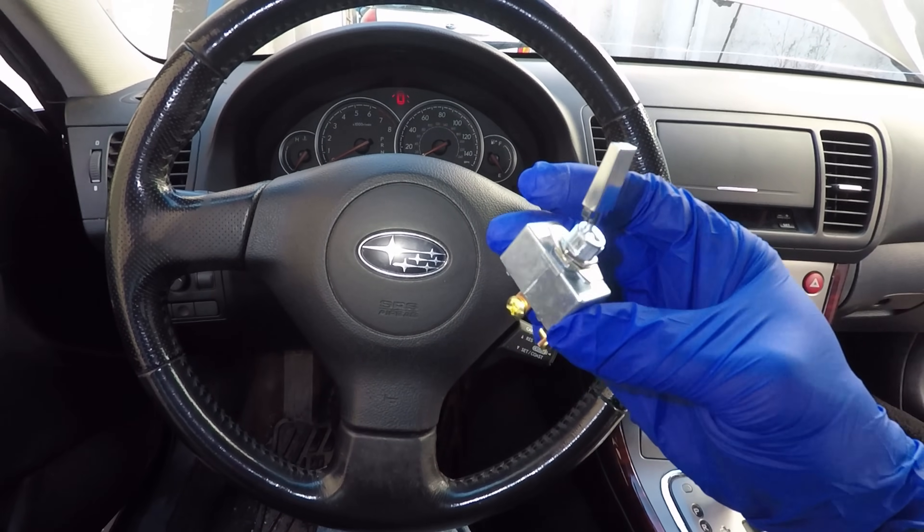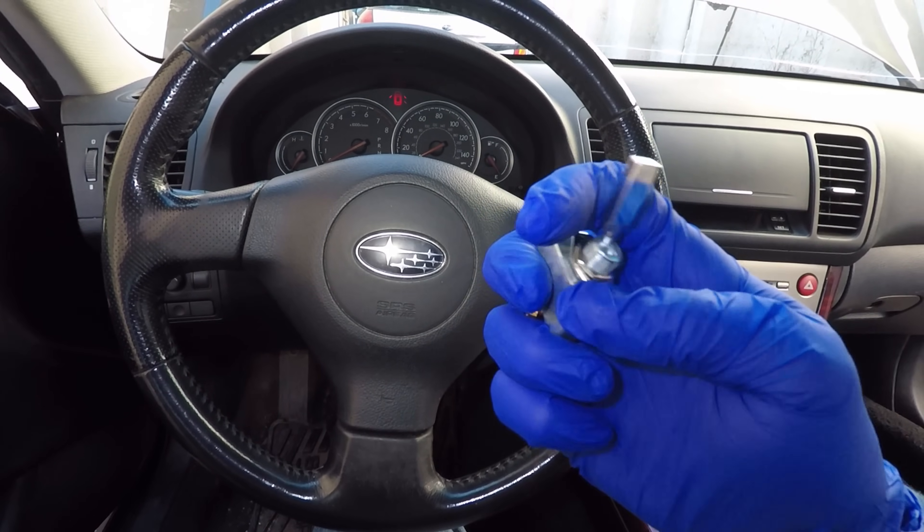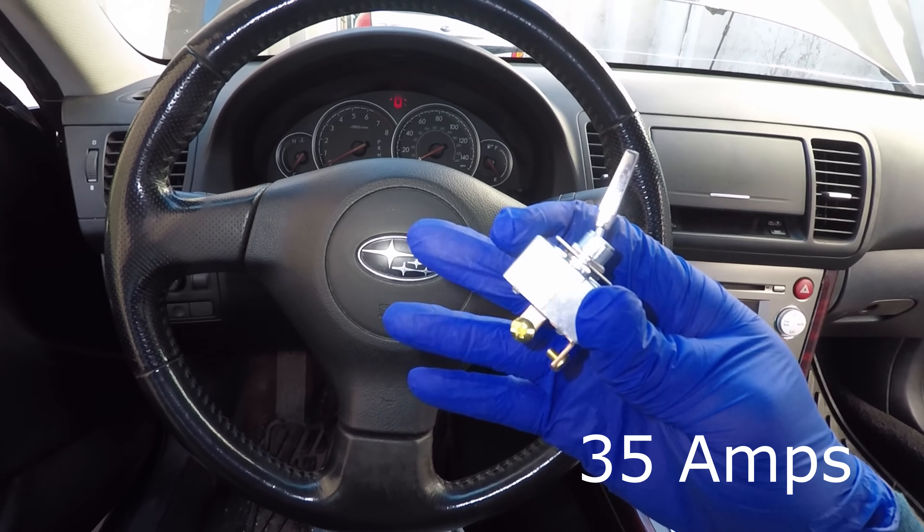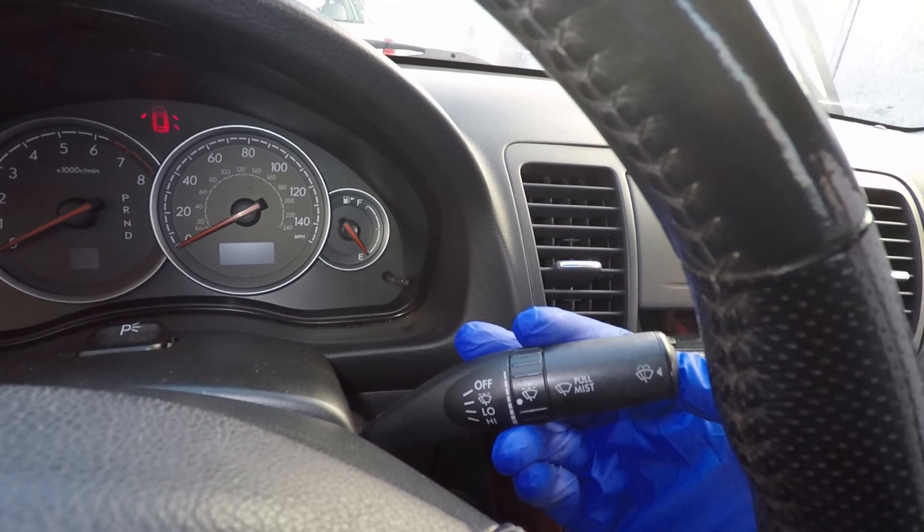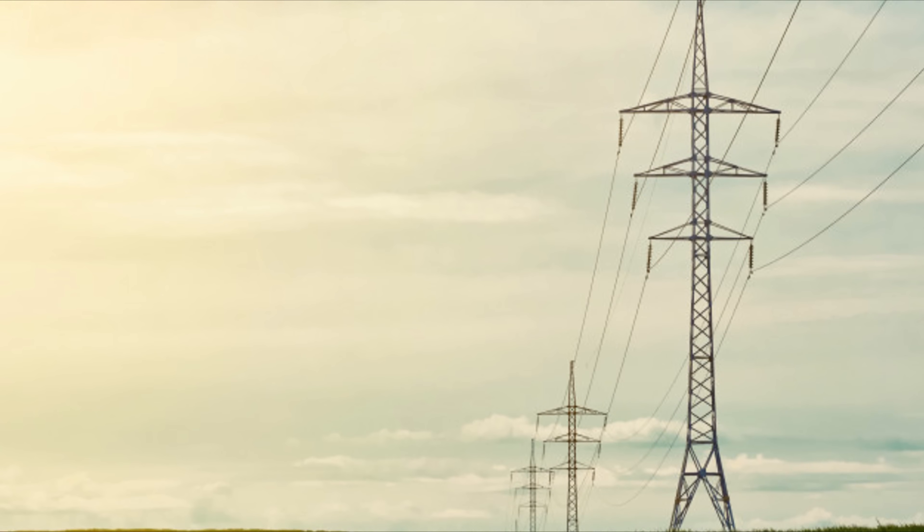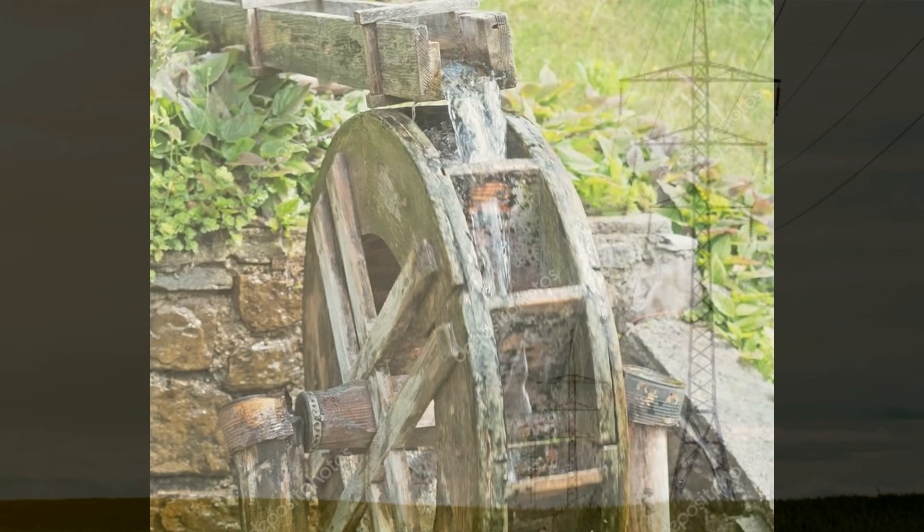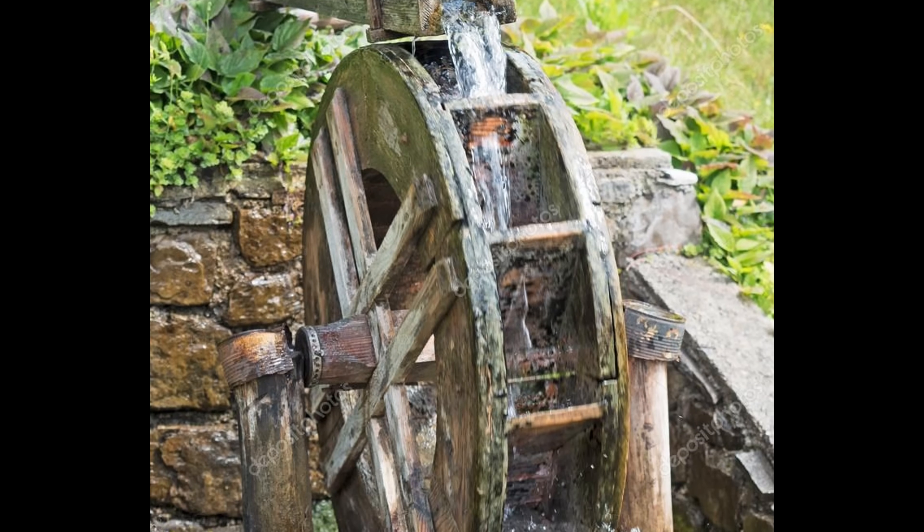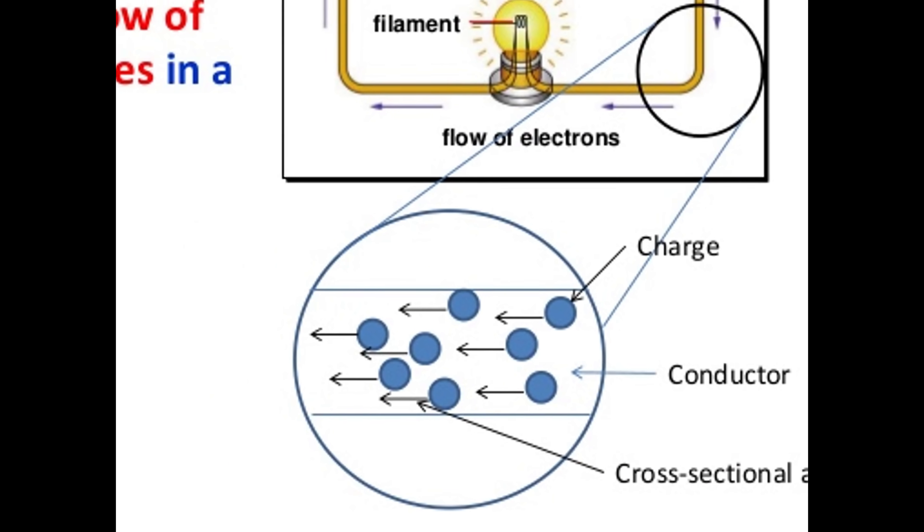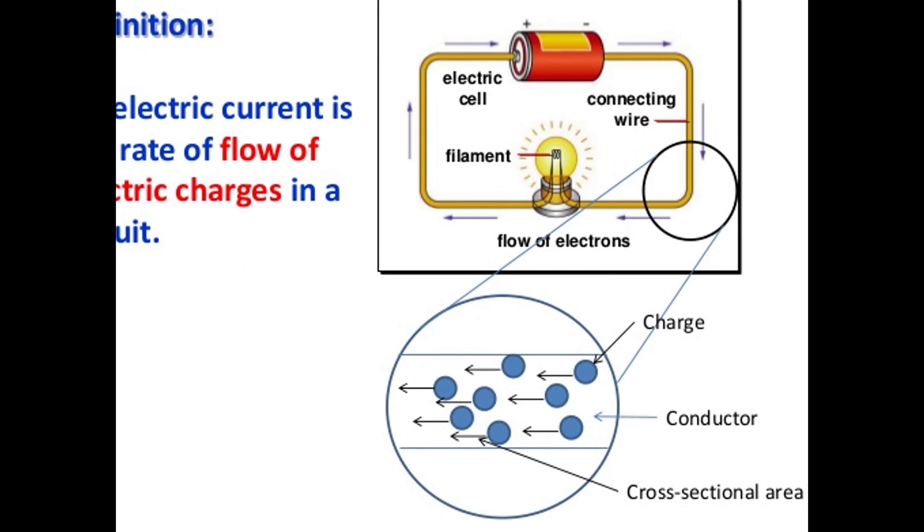Unlike this switch, rated to handle up to 35 amps worth of current flowing through it, some of these switches cannot handle high currents like that. And if you're not sure what electric current is, think of it this way. Just like we need enough water flowing across this mill to make it spin, we need enough flow of electric charges to make a bulb, for example, light up.